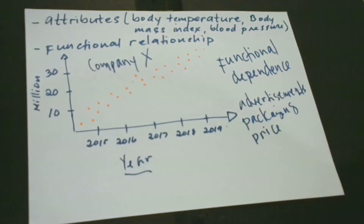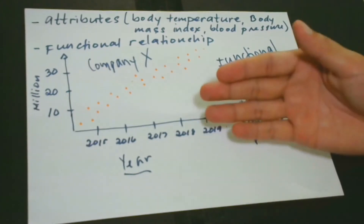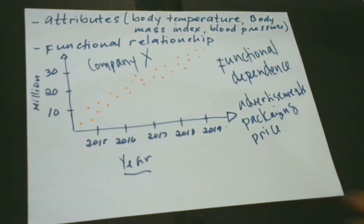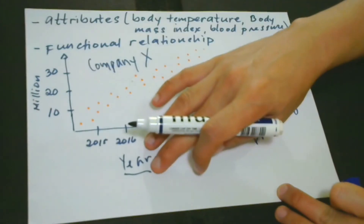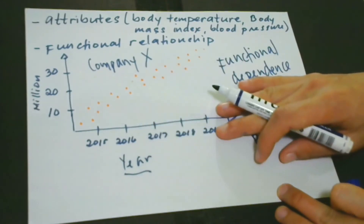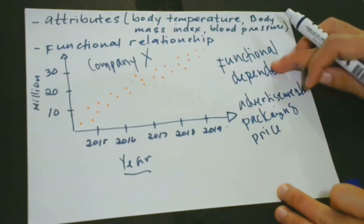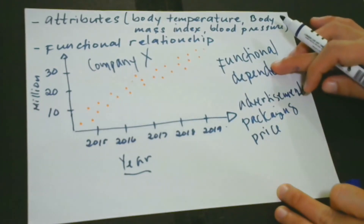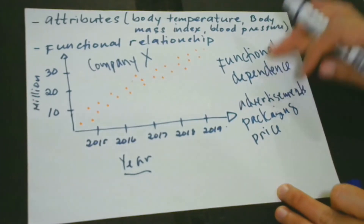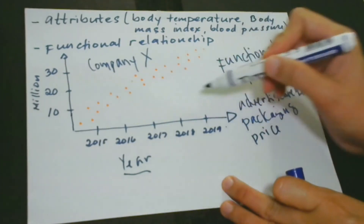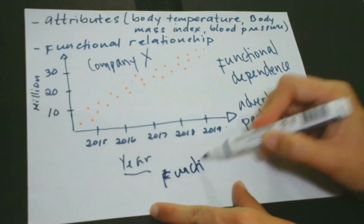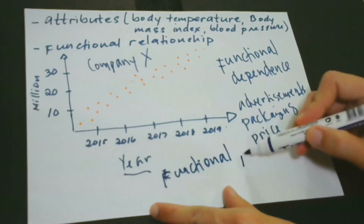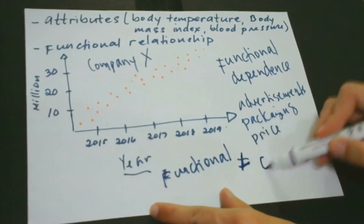By plain sight, we can see that there seems to be a positive relationship — or statistical dependence — between sales in millions and the year. But be careful, because functional dependence is not equal to causal dependence.